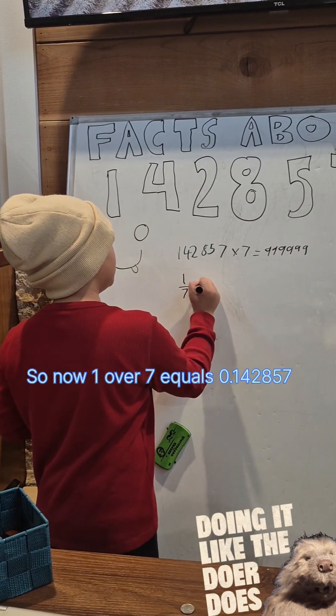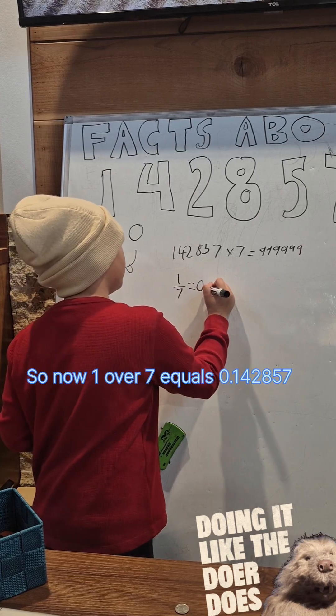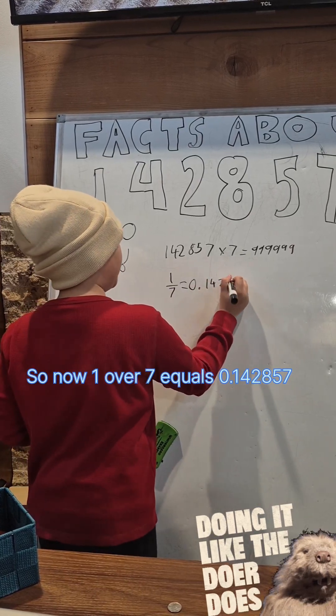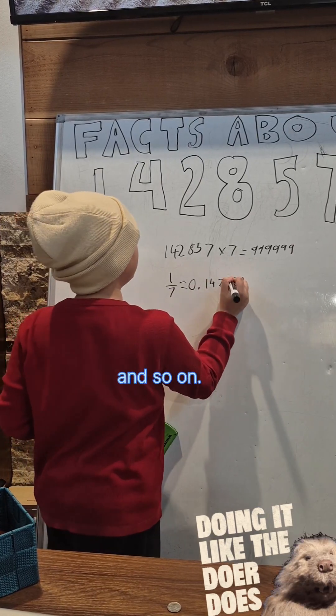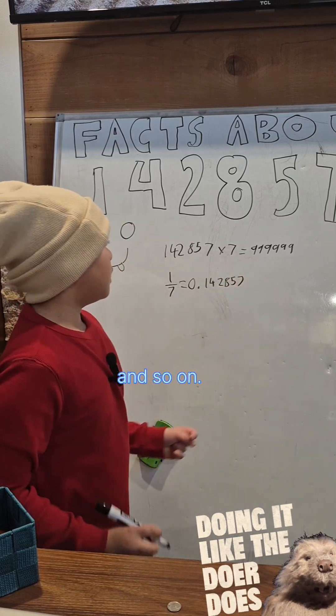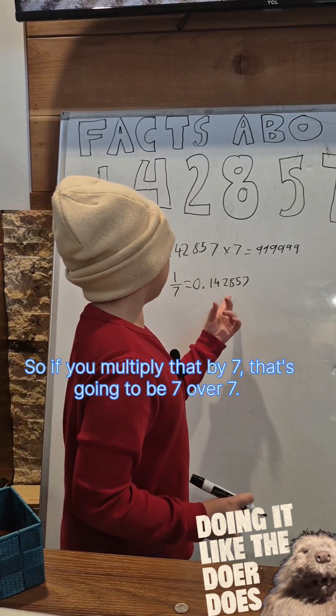over 7 equals 0.142857 and so on. So if you multiply